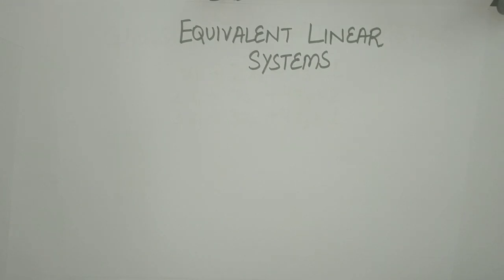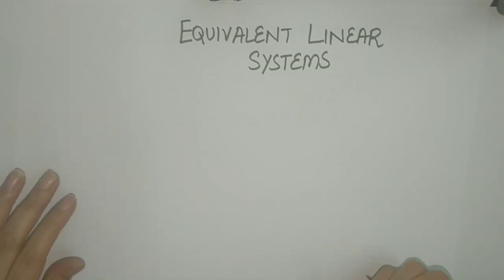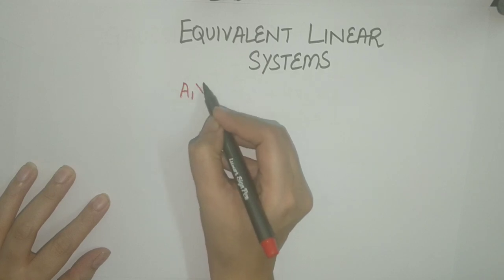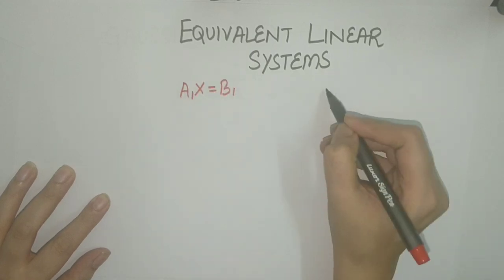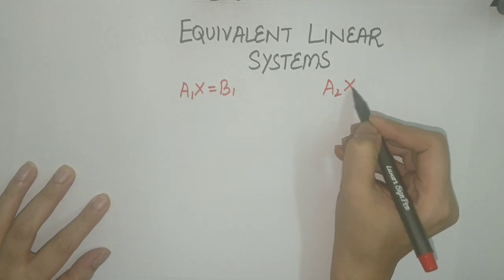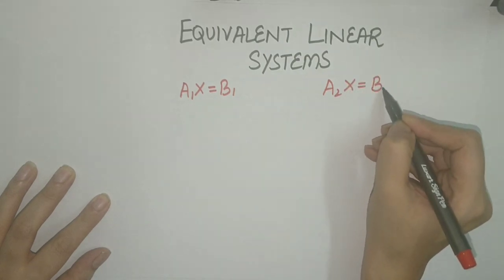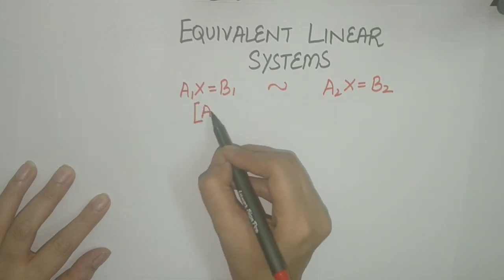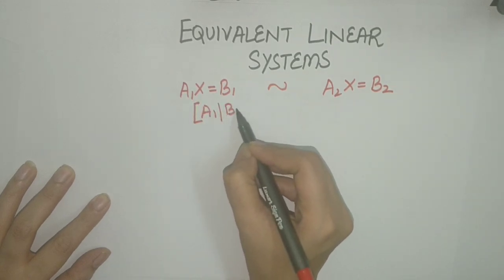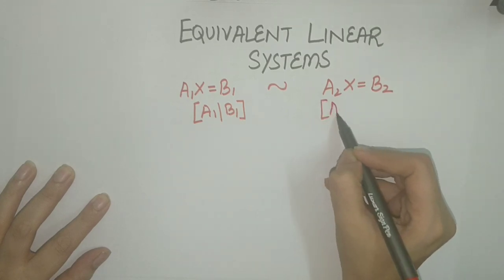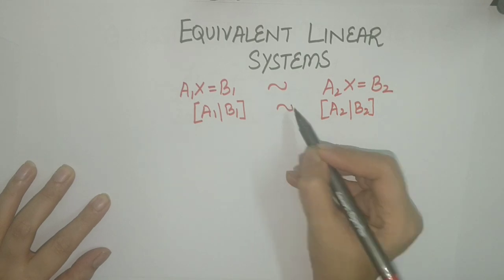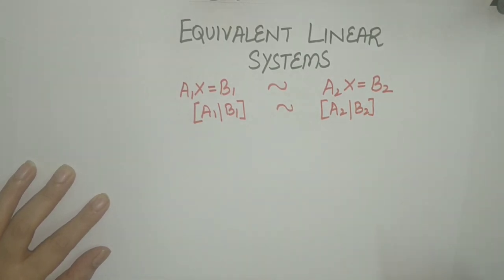Two linear systems are said to be equivalent if they have the same solution set. So two systems given by A1x = B1 and A2x = B2 are said to be equivalent if their corresponding augmented matrices [A1 | B1] and [A2 | B2] are equivalent.